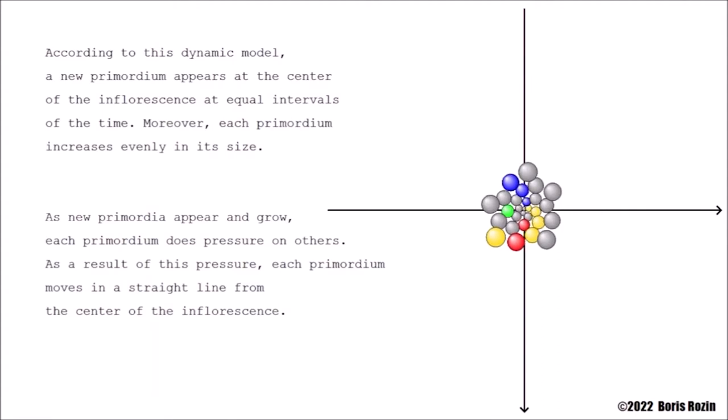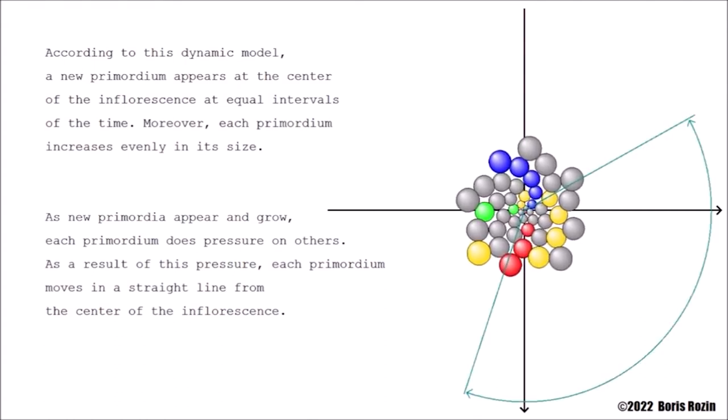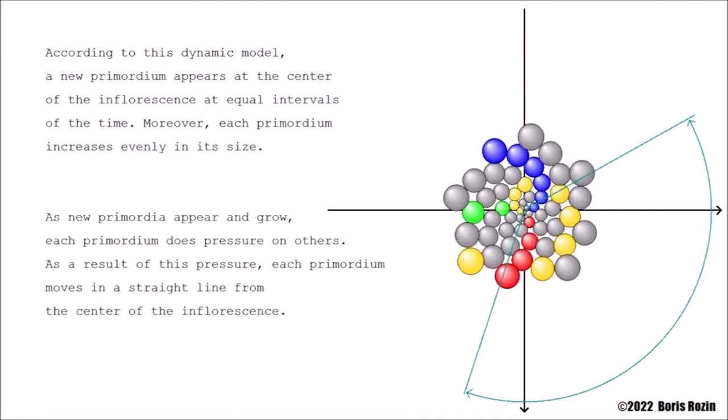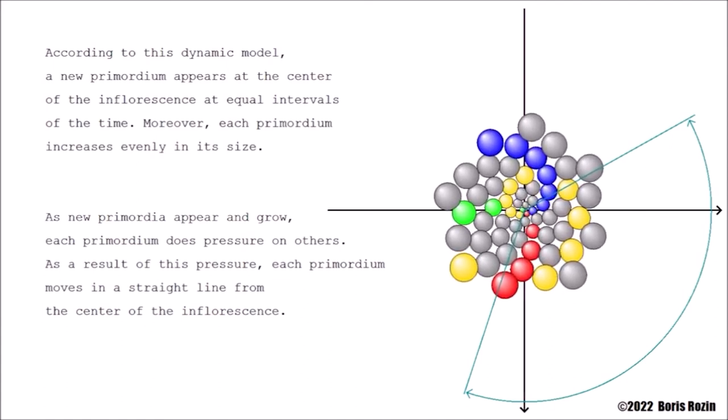According to this dynamic model, a new primordium appears at the center of the inflorescence at equal intervals of time. Moreover, each primordium increases evenly in its size. As new primordia appear and grow, each primordium does pressure on others. As a result of this pressure, each primordium moves in a straight line from the center of the inflorescence.